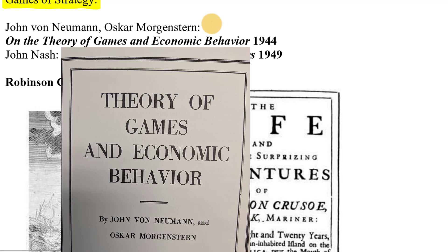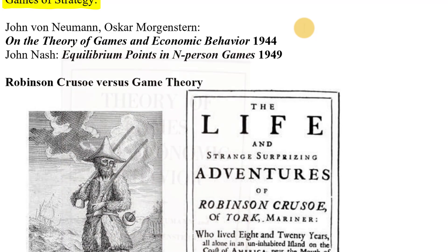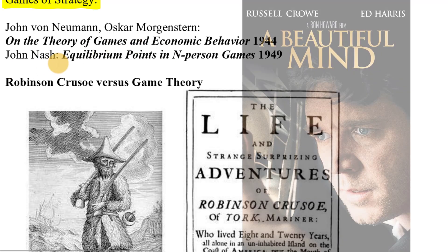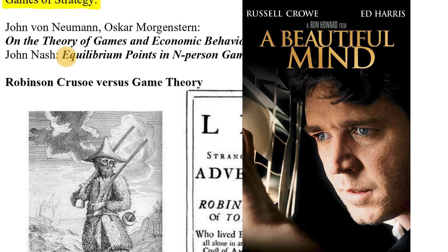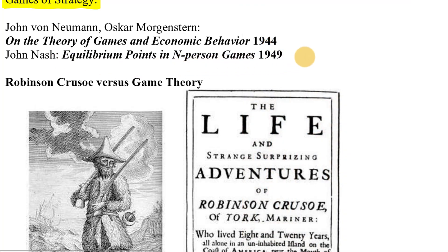The first major book was by John von Neumann, the famous mathematician, and Oscar Morgenstern. In 1944 they released 'Theory of Games and Economic Behavior' — an excellent start, though it covered only a limited class of games. The next major breakthrough came from John Nash — you may know him from the movie 'A Beautiful Mind.' His 1949 paper 'Equilibrium Points in N-Person Games' really opened the field of game theory wide, allowing the study of many more types of situations.